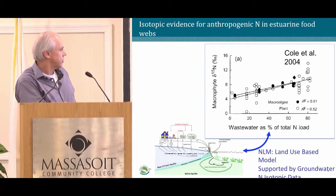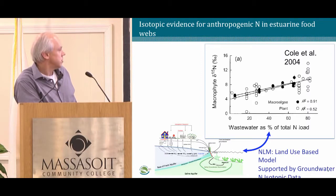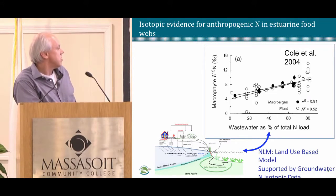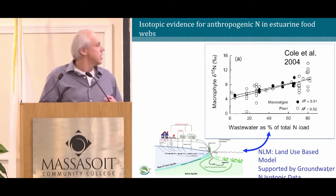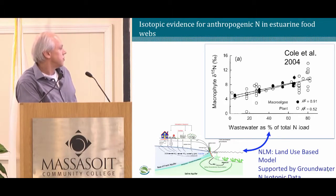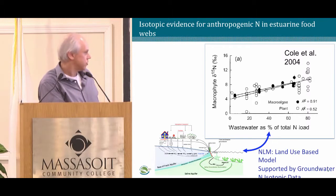We'll also see some nitrogen isotope data today. As we add population density to watersheds, we increase the rate of wastewater input to the aquifer. That nitrogen makes its way to the coast, discharges as coastal groundwater discharge, and interacts with wetlands. Because wastewater tends to have a heavier delta-N15 than other sources, as you increase the percent of total nitrogen load from wastewater, plants and algae in receiving waters tend to increase in delta-N15.